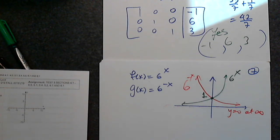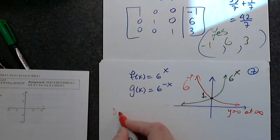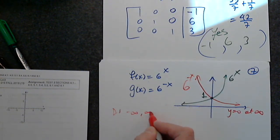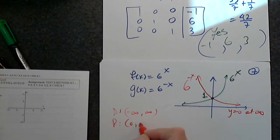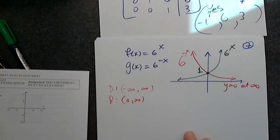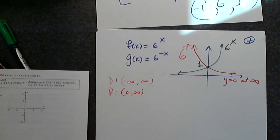What is the domain of 6 to negative x? Like the domain of any exponential function - all real numbers, it's a friendly function. What about the range? Correct. Domain is negative infinity to infinity, the range is 0 to infinity.